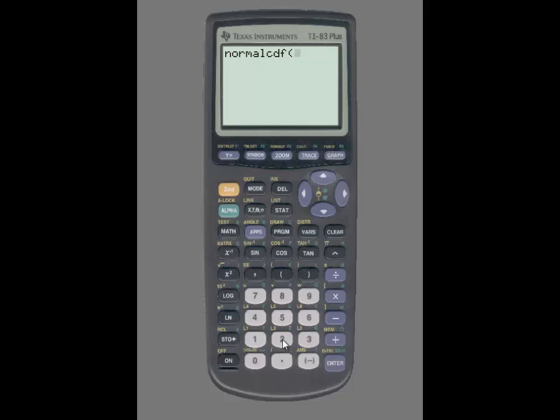In this case, the lower bound is negative infinity. And since you can't put negative infinity into the calculator, I am simply going to use negative 10. Then I am going to press the comma button and then enter the upper bound which is 0.75. Press enter and 0.7734 is the area to the left of 0.75.